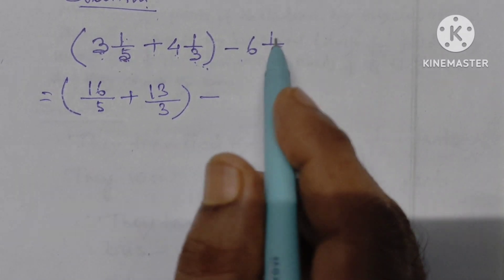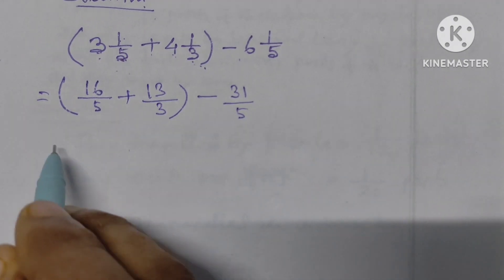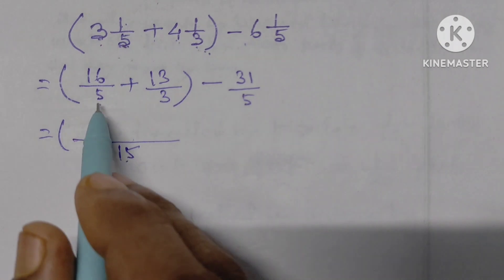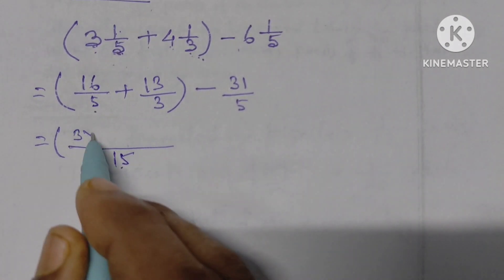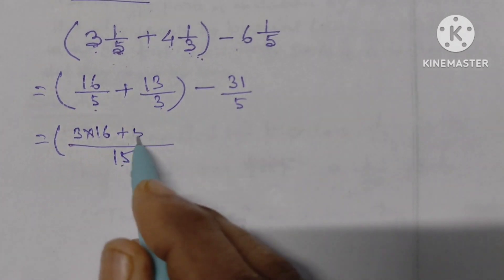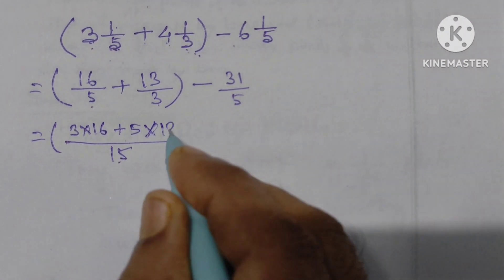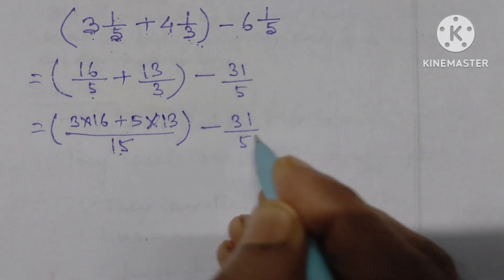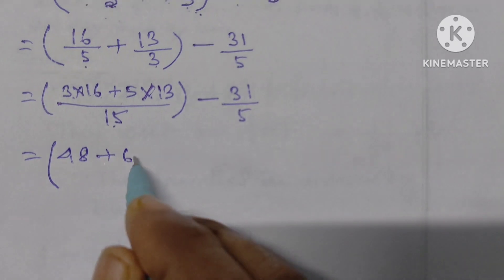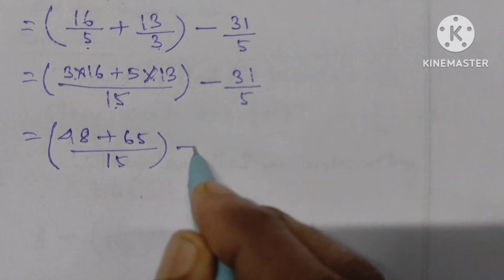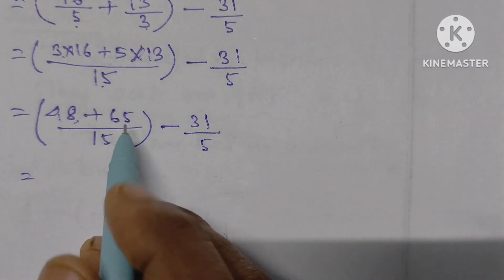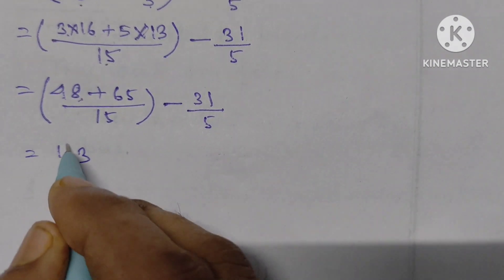Minus: 6 times 5 is 30, plus 1 is 31 by 5. Now LCM of 5 and 3 is 15. If we divide 15 by 5 we get 3; 3 into 16 is 48. If we divide 15 by 3 we get 5; 5 into 13 is 65. So we have 48 plus 65 by 15.